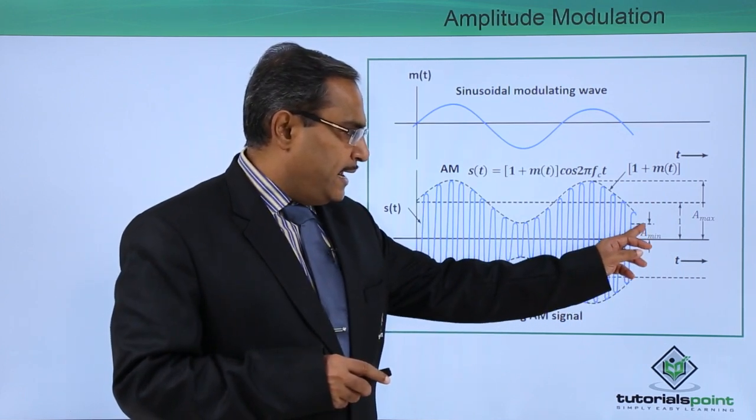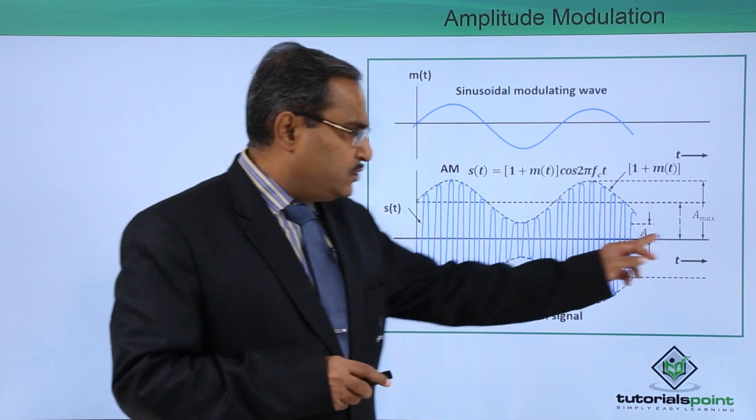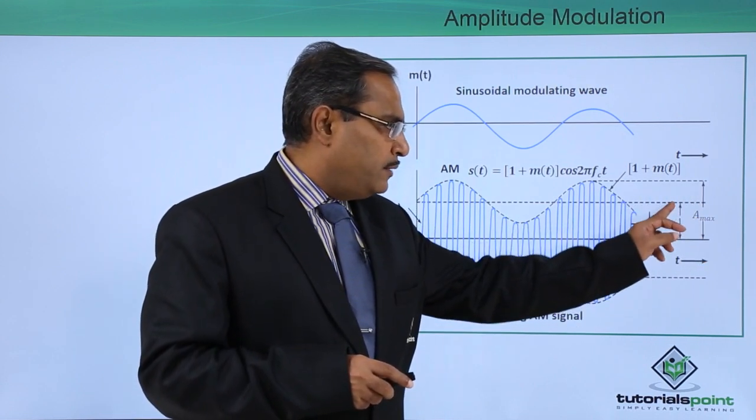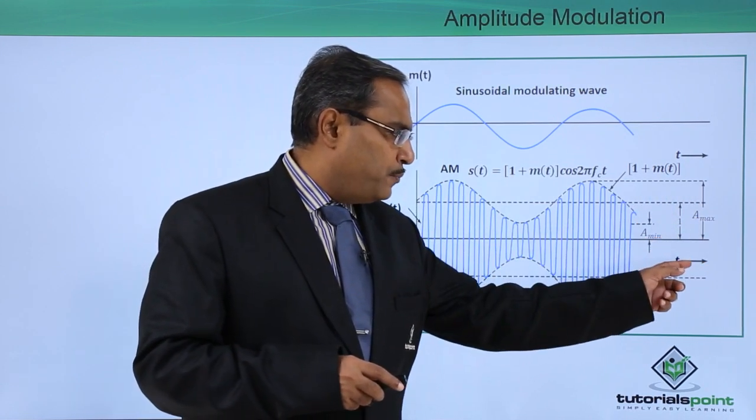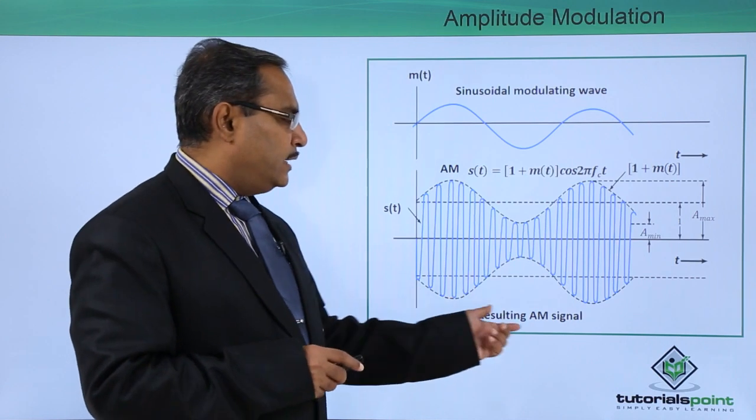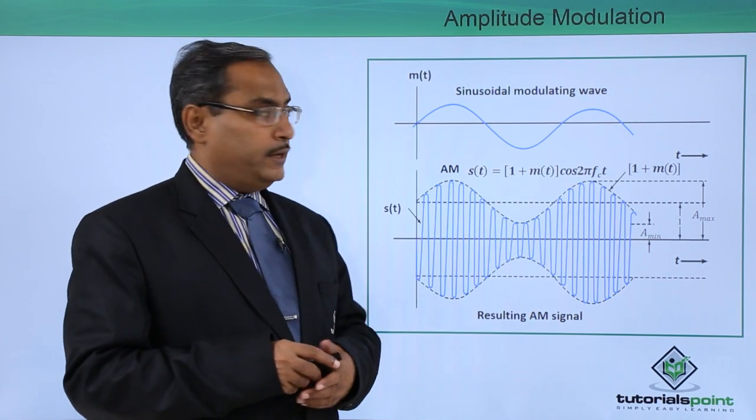What is this? This is our A_min. This is our A_min and this one A_max and this one 1 and here we have plotted t, and in this way the resulting amplitude modulated signal will be obtained.